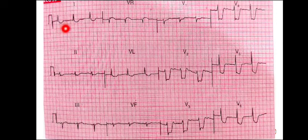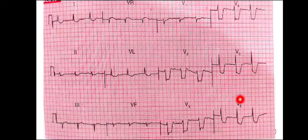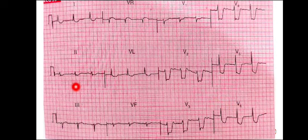In lead 1 there is ST segment depression. As we know, lead 1 is a lateral lead, so we check whether this follows a vascular ischemia pattern. The lateral leads are lead 1, aVL, V5, and V6, and ST segment depression is present in all of them — lead 1, aVL, V5, and V6.